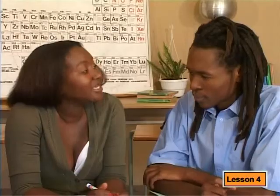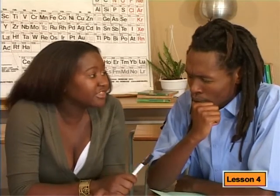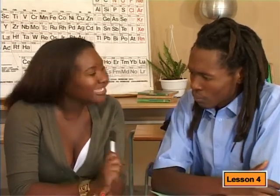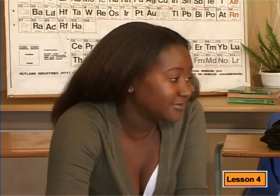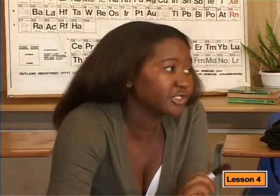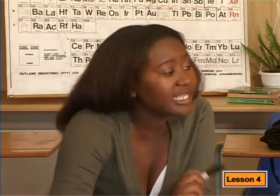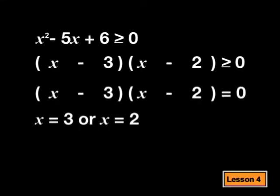This method seems like a lot of work. You said that this was one of the methods — is there an easier method than the table method? Yes. There are two other methods you could use, but it is up to you to decide which method you find easier. Let's look at these other methods and then you can decide for yourself. This method is similar to the table method and also involves critically considering all possible regions of the solution, but instead of using a table, we use a number line. I am going to use the same example so that we can compare the solutions.